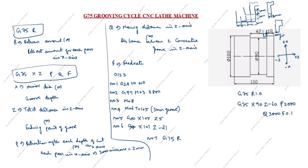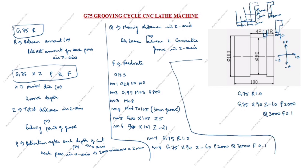N07: G75 R1. N08: G75 X90 Z-60 P2000 Q3000 F0.1 — this is the main grooving cycle block with all parameters specified.